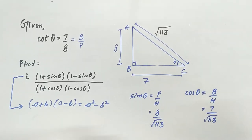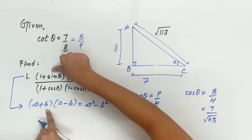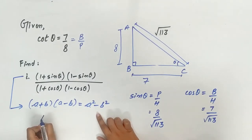In numerator, A is 1 and B is sin theta. So, 1 plus sin theta multiply 1 minus sin theta is equal to 1 square minus sin square theta.